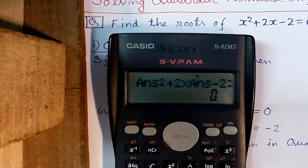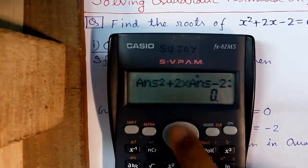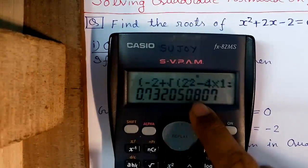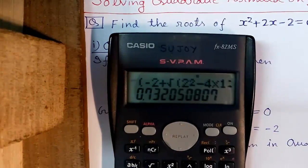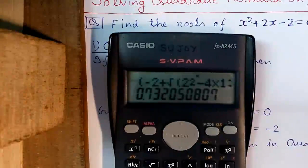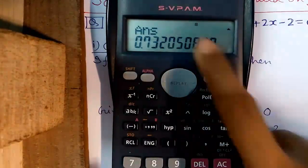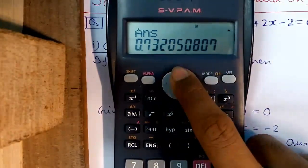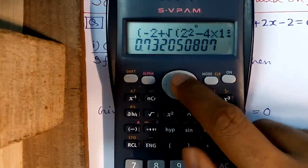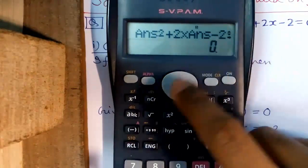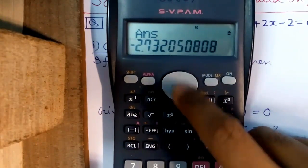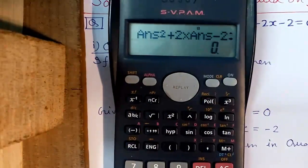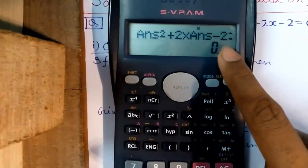And this should be true for the positive root also. Press joystick up to get the positive root, press equals to do the calculation again. Now press the Answer button to get the positive root. We don't need to re-enter the equation because it is already stored in the calculator. Press joystick up to see the previous calculation and press equals — which is true for the positive root also.